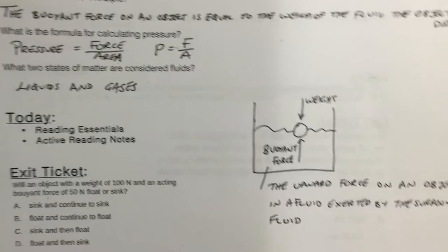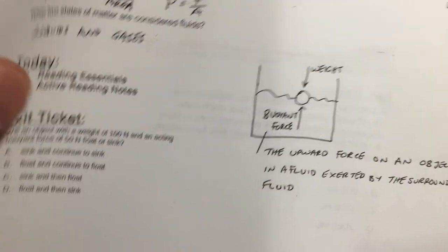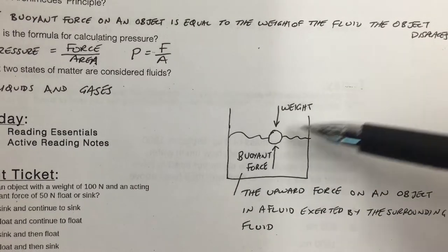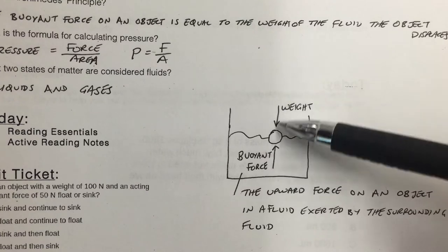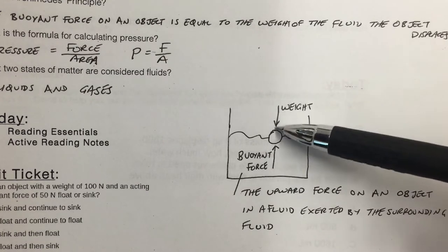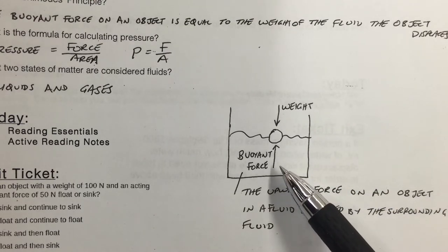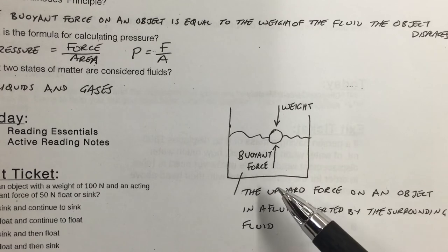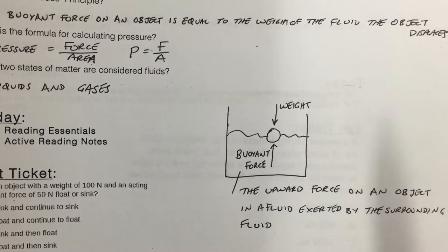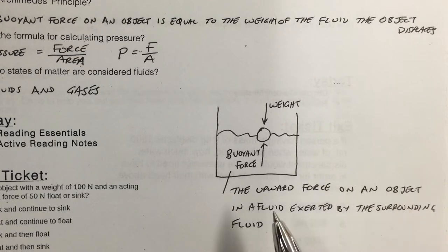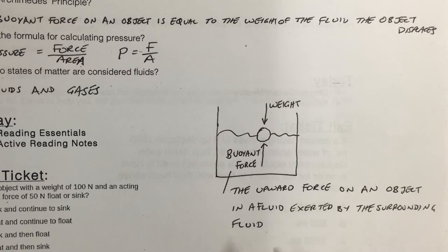Let's understand the buoyant force. If we have a ball floating in water, the ball has mass and therefore weight — that force goes downward. What keeps the ball floating on top of the water is the buoyant force. The buoyant force is the upward force on an object that is in a fluid. Remember, a fluid can be a liquid or a gas, and this force is exerted by the surrounding fluid.